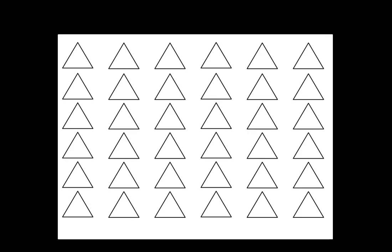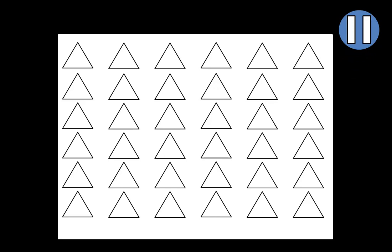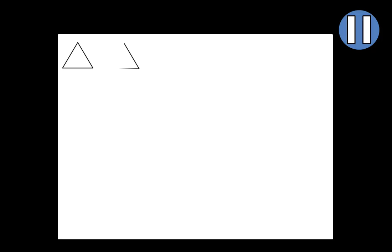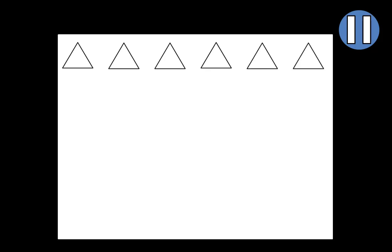The first step is to draw 36 empty triangles. Remember that you can pause the video whenever you like — if you want more time, simply click Pause. We'll begin by drawing six triangles across the top: draw the first triangle in this corner, draw the second one here, the third here, the fourth here, the fifth here, and the sixth triangle here.